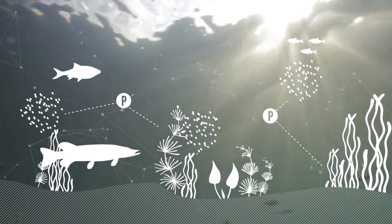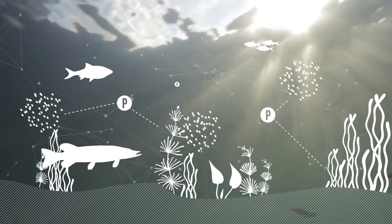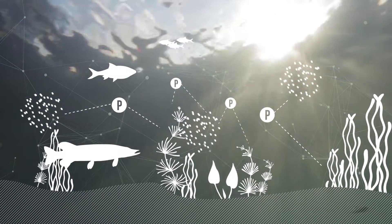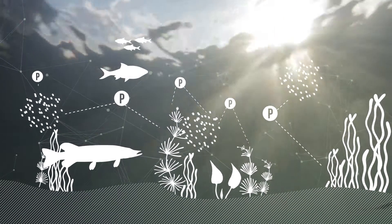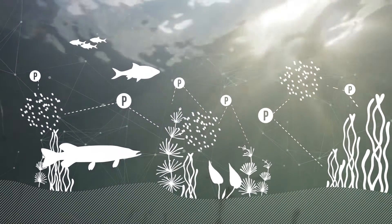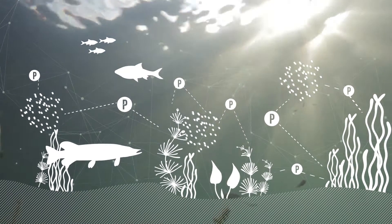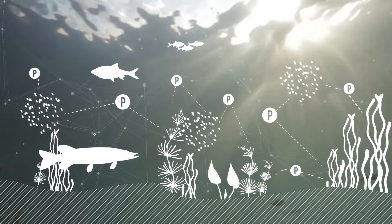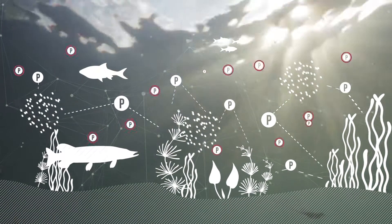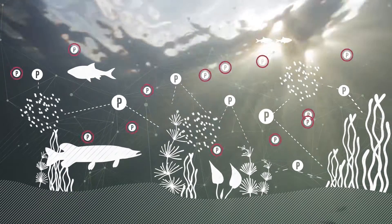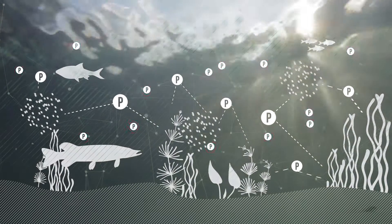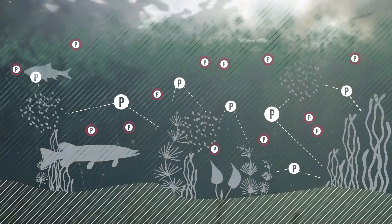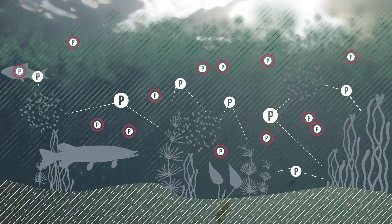Initially, an increase of the nutrient load is easily absorbed by the system. If the increase is too large, the system reaches a critical nutrient load. Plants and water fleas become saturated.